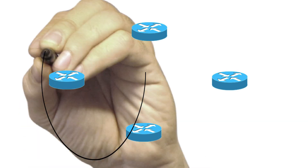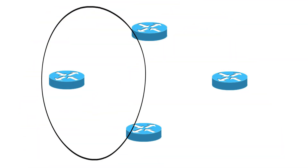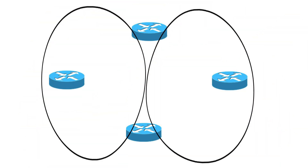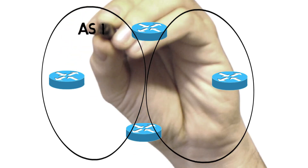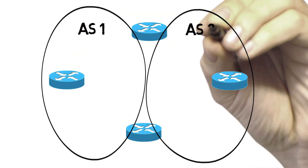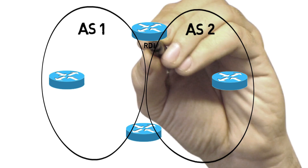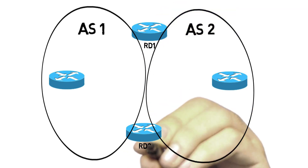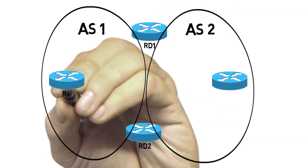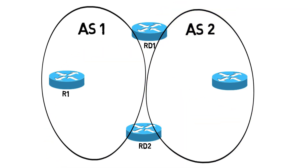The route redistribution issue we saw in our prior video had a single point — router R2 — where route redistribution was happening. However, if we were designing a network ourselves, we might look at that redistribution point and think that's a potential single point of failure. Instead, we might want to have two or more routers redistributing between different autonomous systems, different routing domains. We can certainly do that, but in some cases it might introduce a troubleshooting issue.